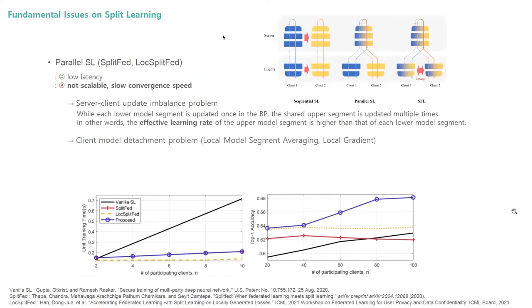In parallel split learning, a single upper-model segment is connected with multiple lower-model segments. Therefore, while each lower-model segment is updated once per epoch, the shared upper-model segment is updated multiple times. In other words, the effective learning rate of the upper-model segment is higher than that of each lower-model segment. Such gap between the lower-model segment and the upper-model segment, which gets severe as the number of clients increases, induces the unscalability and convergence speed degradation of parallel split learning.